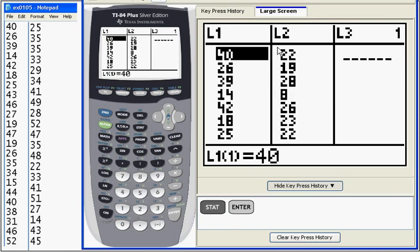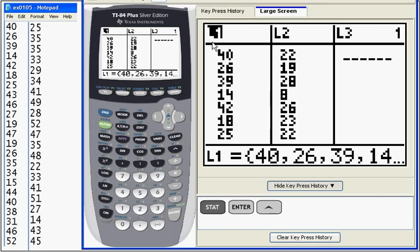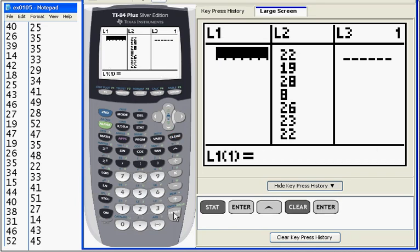Now I have values in my lists already. If I want to clear the lists, I go up onto the label of the list. I hit clear and then enter and the numbers are gone.